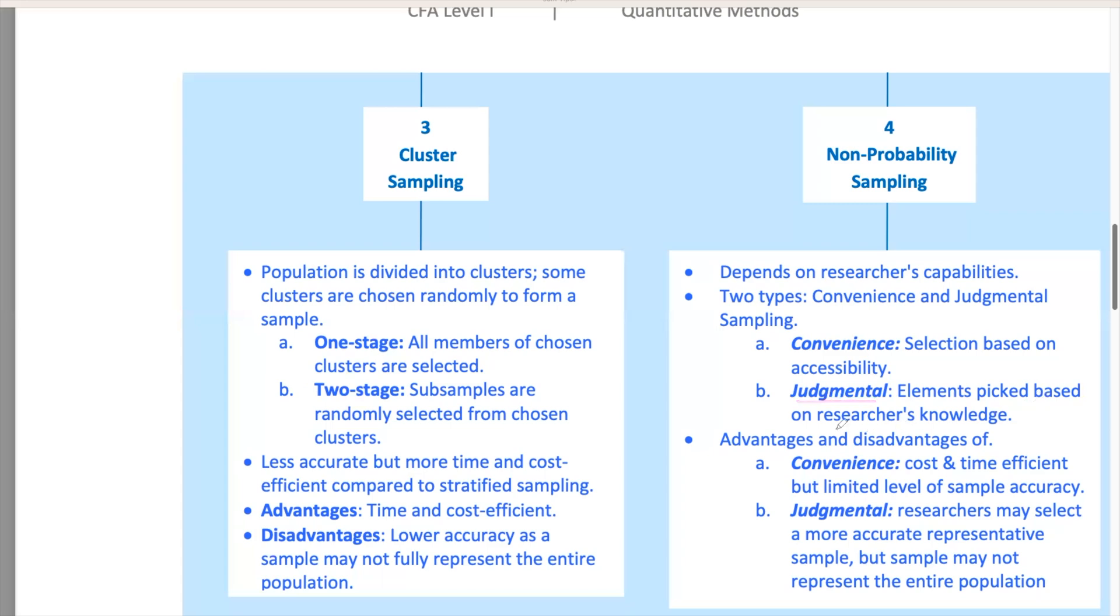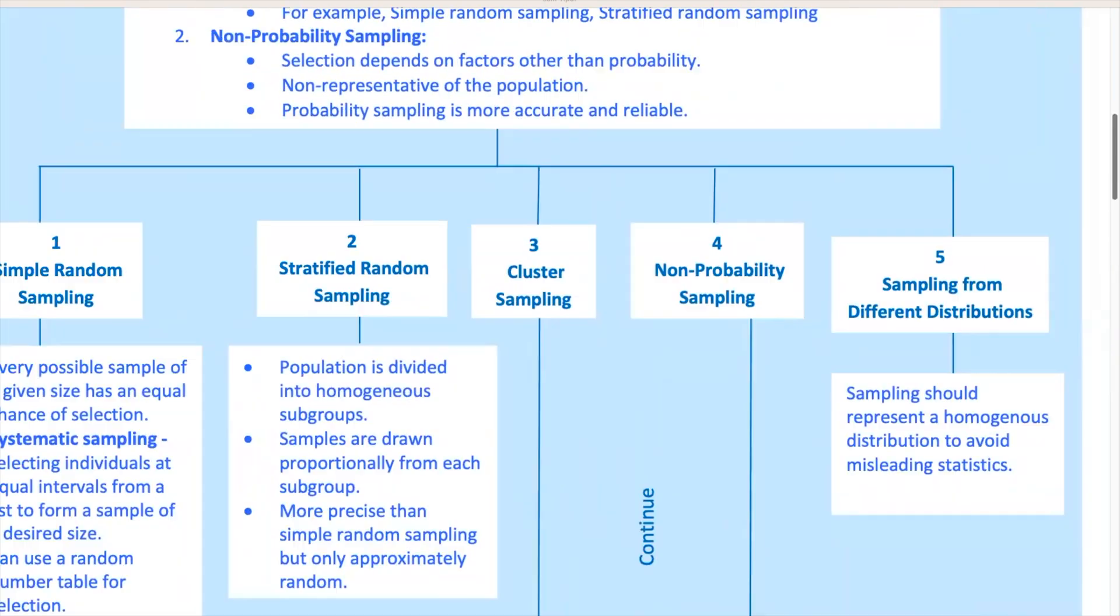Judgmental sampling relies on the researcher's knowledge to handpick the sample. It can be more accurate, but is prone to bias. This method relies heavily on the expertise of the researcher to select a sample that they believe is representative of the population. For instance, if you're studying the effects of a new teaching method, you might select teachers who are known to be early adopters of new techniques. While this can provide useful insights, the results may be biased by the researcher's choices. One last point here. When sampling from different distributions, make sure your sample represents a homogeneous distribution. Mixing data from different periods or conditions can skew your results.